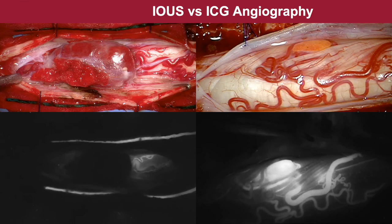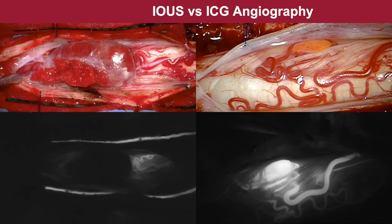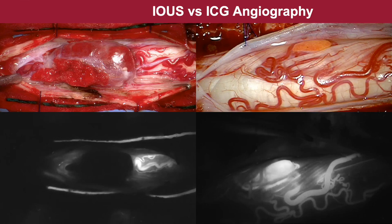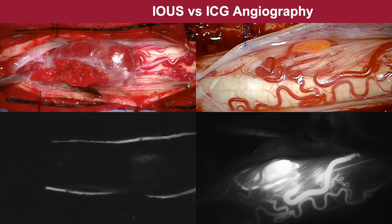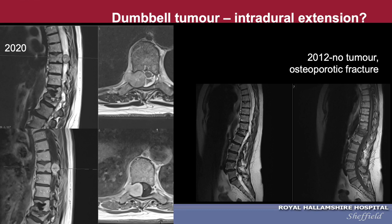I wanted to confirm this with ICG, and on the ICG image you can see that despite good flushing around the lesion, the hemangioblastoma remains dark — extremely helpful to confirm it will not bleed during subsequent surgery. This is completely different to the case on the right side where the lesion is highly vascular with significant blood supply, so you really want to identify the feeding vessels to the hemangioblastoma before proceeding. These are images after excision of the hemangioblastomas in both cases.